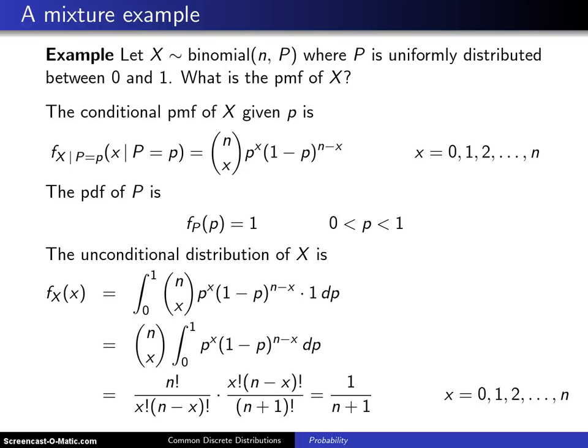This final example in this chapter illustrates how discrete and continuous distributions can be combined. In the second section of this chapter, we defined the binomial distribution with parameters n and p.